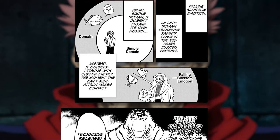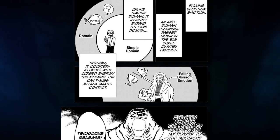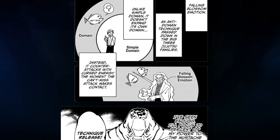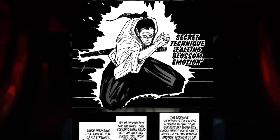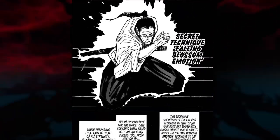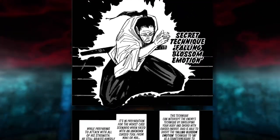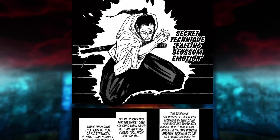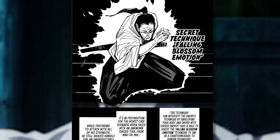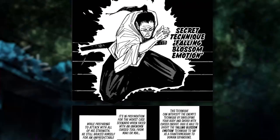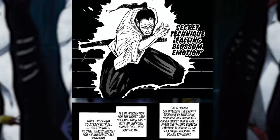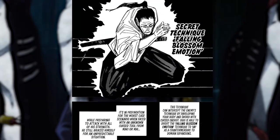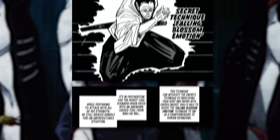The curse energy defends the user automatically, countering any attack with equal force to nullify it. When the ability is applied to a defensive sword stance, not only is the user shrouded in cursed energy but their sword is as well. This allows the blade to automatically strike anything the curse energy comes into contact with, usually dealing a final and fatal blow.